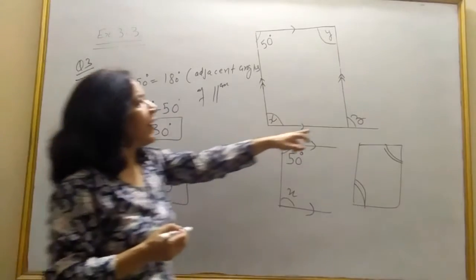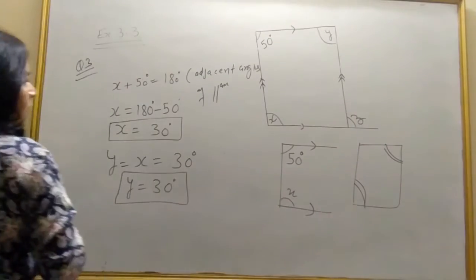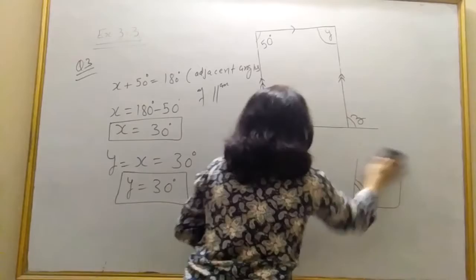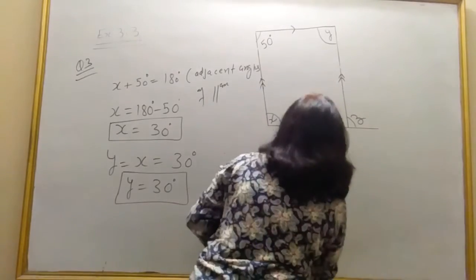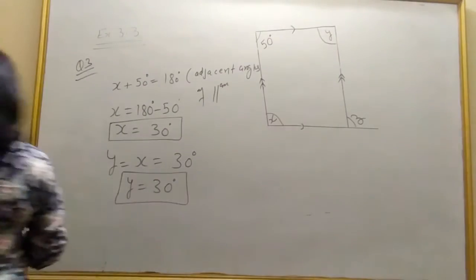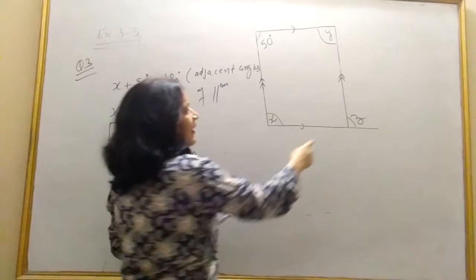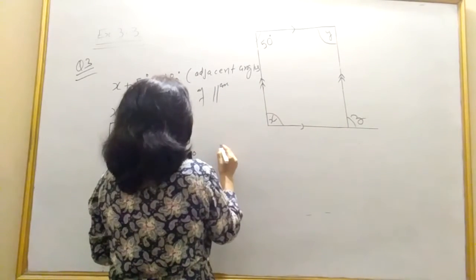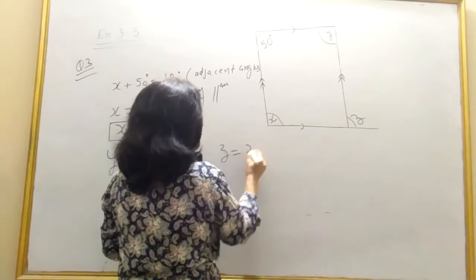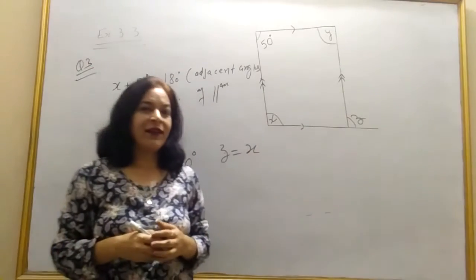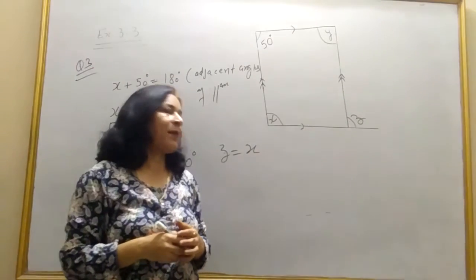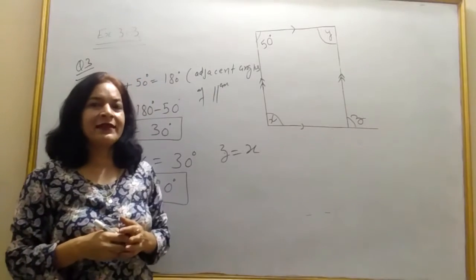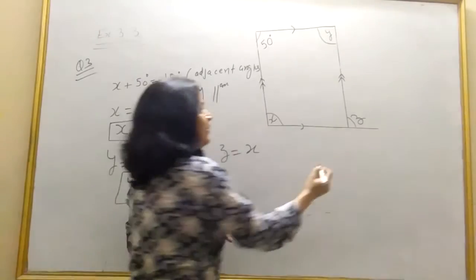Now what about z? Here angle z. I can find z here. Angle z will be equal to x. Can anybody tell me why? Yes. Remember the properties of parallel lines. Look here.